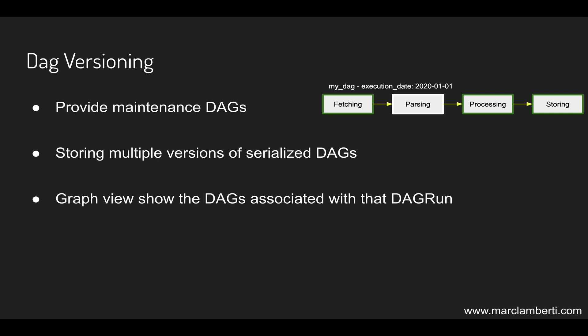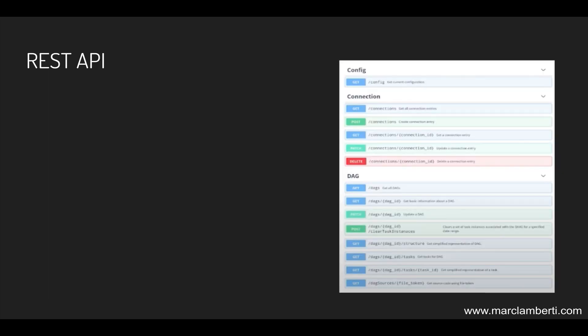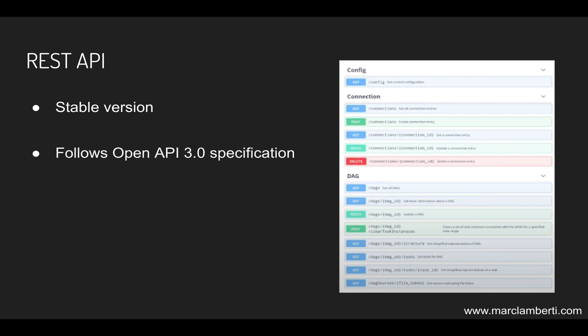Another great improvement is related to the REST API. As you may know, the current API is still experimental and doesn't offer many possibilities. In Airflow 2.0 the API will finally be stable with many more routes to interact with connections, DAGs, and so on. The API will follow the OpenAPI 3.0 specification to meet standard requirements and will be accessible through Swagger.